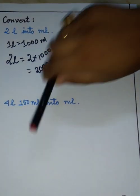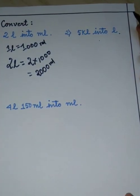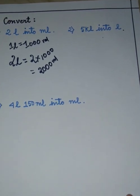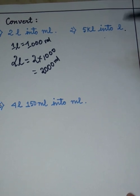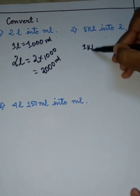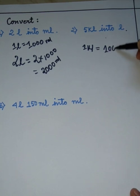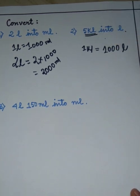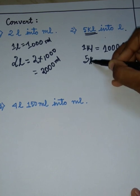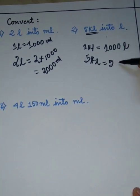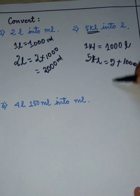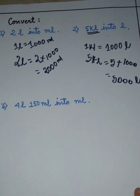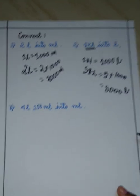Next sum: 5 kilolitre equals how much litre? First we remember that 1 kilolitre equals 1000 litre. We note that down. Then, since 5 kilolitre is given, 5 kilolitre equals 5 into 1000, which means 5000 litre. So 5 kilolitre equals 5000 litre.